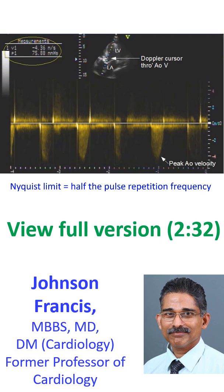The small figure above shows the line of the CW Doppler cursor passing through the aortic valve. The lower portion shows the tongue-shaped Doppler signal due to systolic flow in the aorta just beyond the aortic valve.